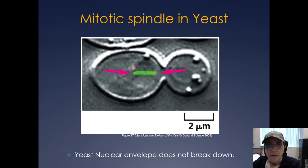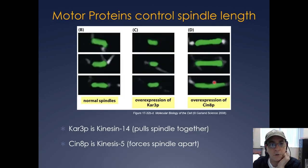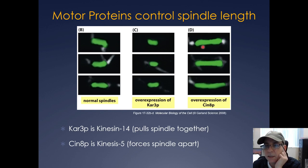In yeast, the nuclear envelope doesn't break down, but a mitotic spindle still assembles within the nucleus. You can see the effects of the various motor proteins in Saccharomyces. Overexpressing CAR3P (kinesin 14, which pulls the spindle together) makes the spindle shorter, while overexpressing SYN8P (kinesin 5, which forces the spindle apart) increases spindle length beyond normal.